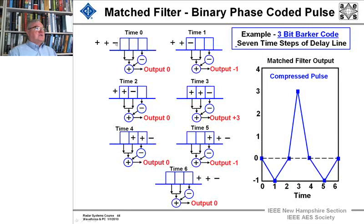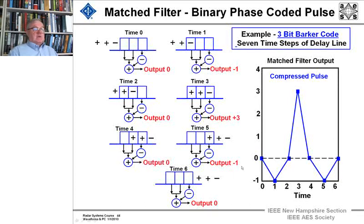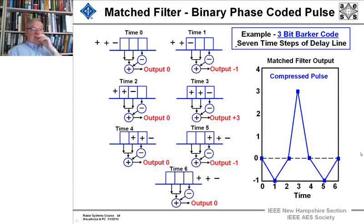What you do is you just change or don't change the phase according to this code as you transmit the pulse. Say we transmit out a pulse which has a plus, a plus, and a minus. And what we do is we pass this pulse through this — you get a 0, then the output's a minus 1, then a 0, then a 3, then a 0, then a minus 1, and then a 0. The matched filter output is the convolution of the pulse — we just do that digitally. And the output, you see, you gain a factor of 3 — 6 dB.